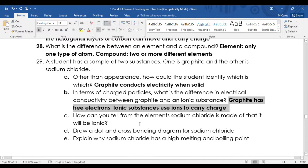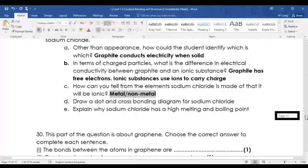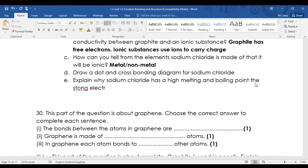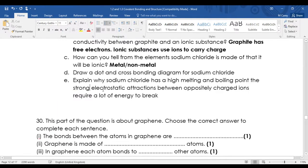How many elements does sodium chloride contain? It's metal non-metal, so that's two elements. Draw a dot and cross diagram - I'm afraid you're going to have to look that one up yourself. I'll maybe do it at the end. Explain why sodium chloride has a high melting and boiling point - strong electrostatic attractions between oppositely charged ions require a lot of energy to break.